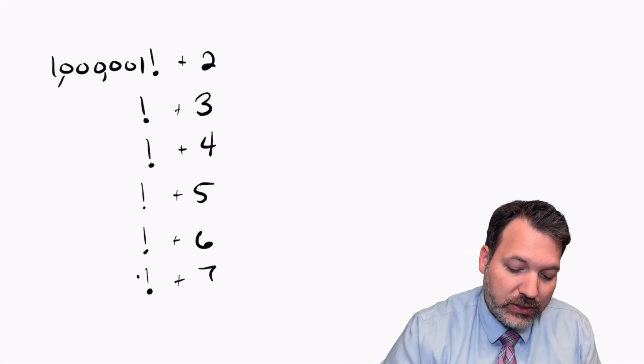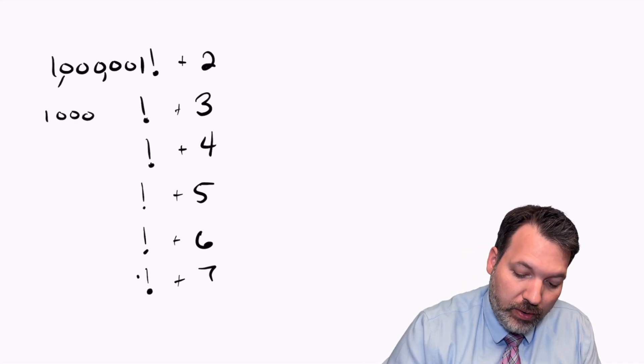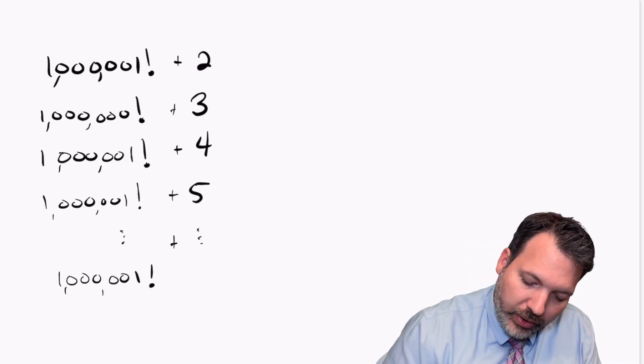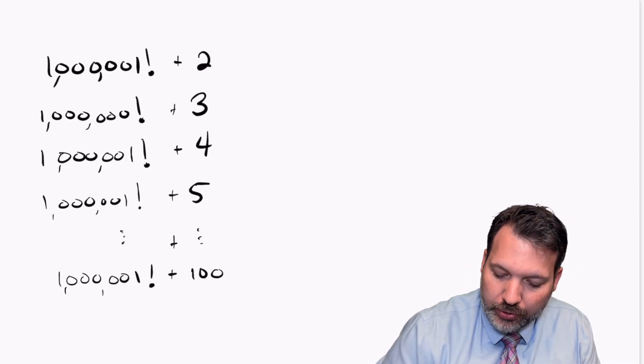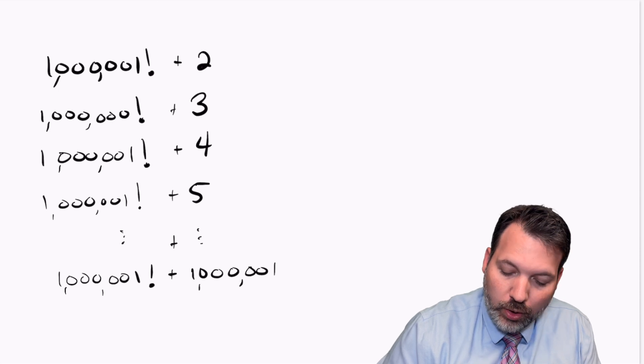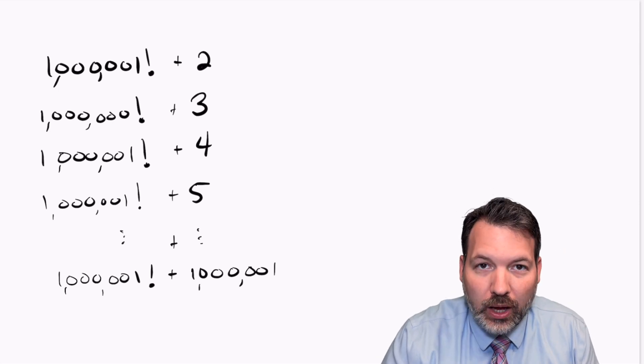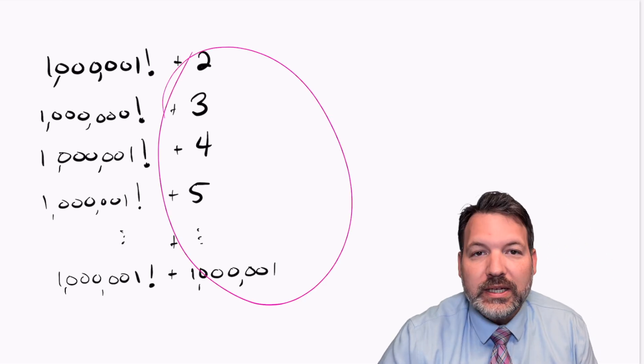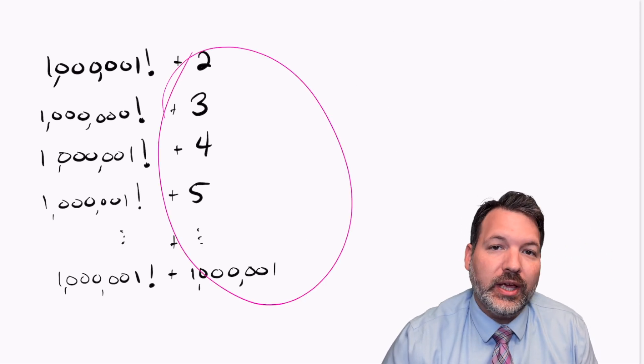1,001 factorial plus 2 is some even number. 1,001 factorial plus 3 is some multiple of 3, all the way down to 1,001 factorial plus 1,001, which must be some multiple of 1,001, and so there you have it. That is 1,000,000 guaranteed composite numbers in a row.